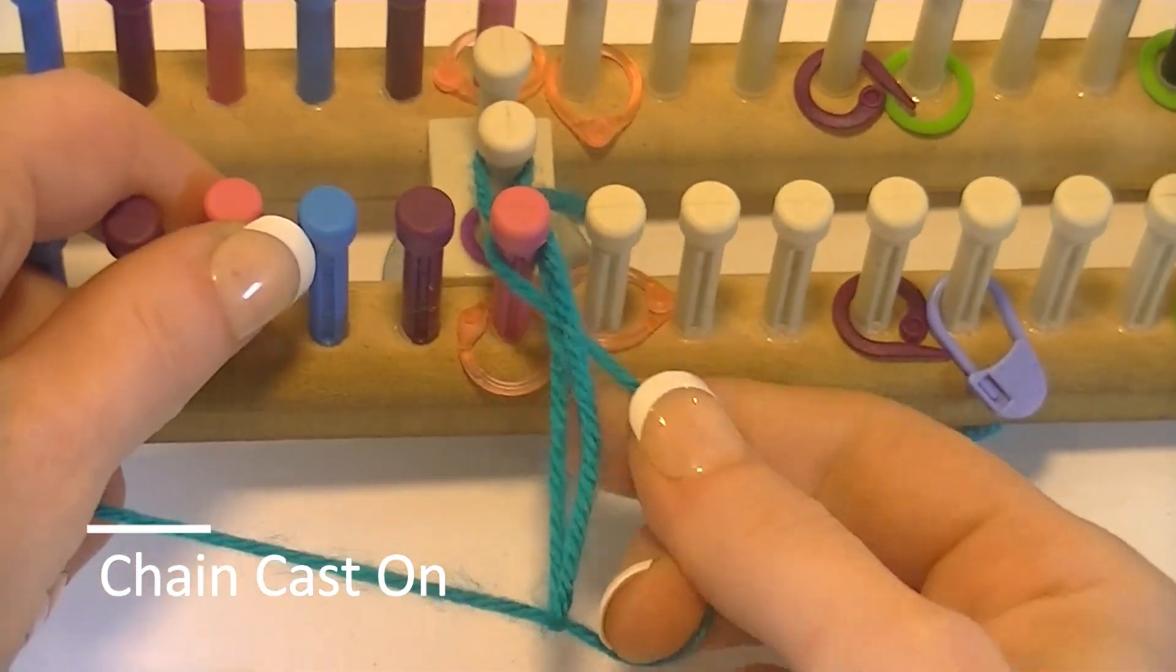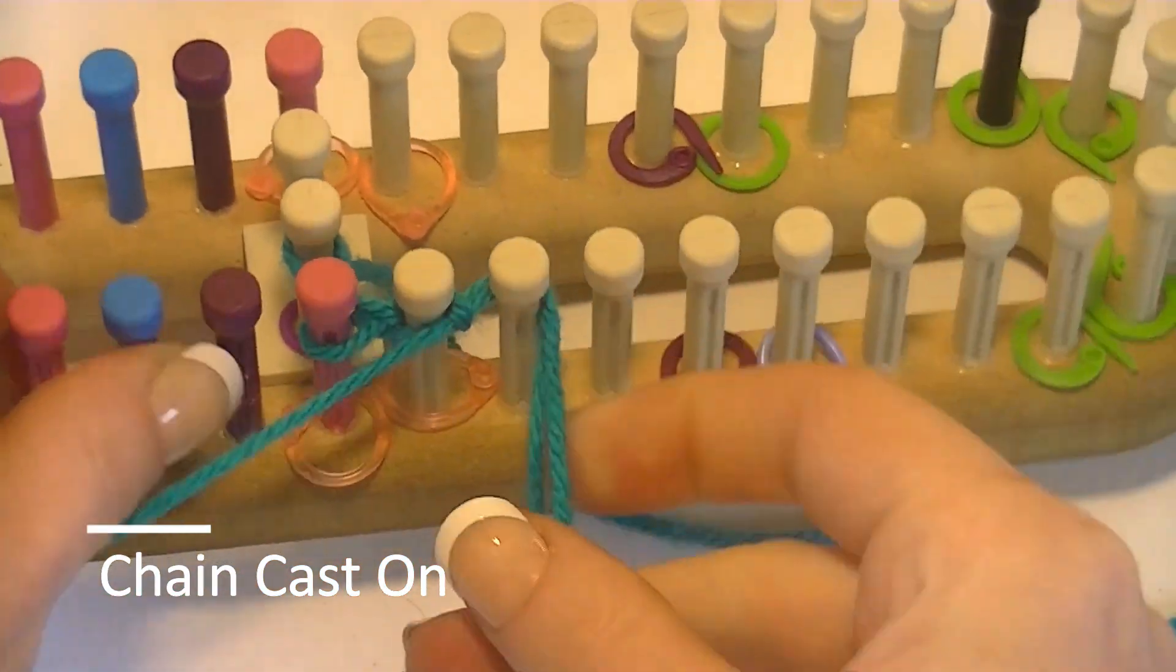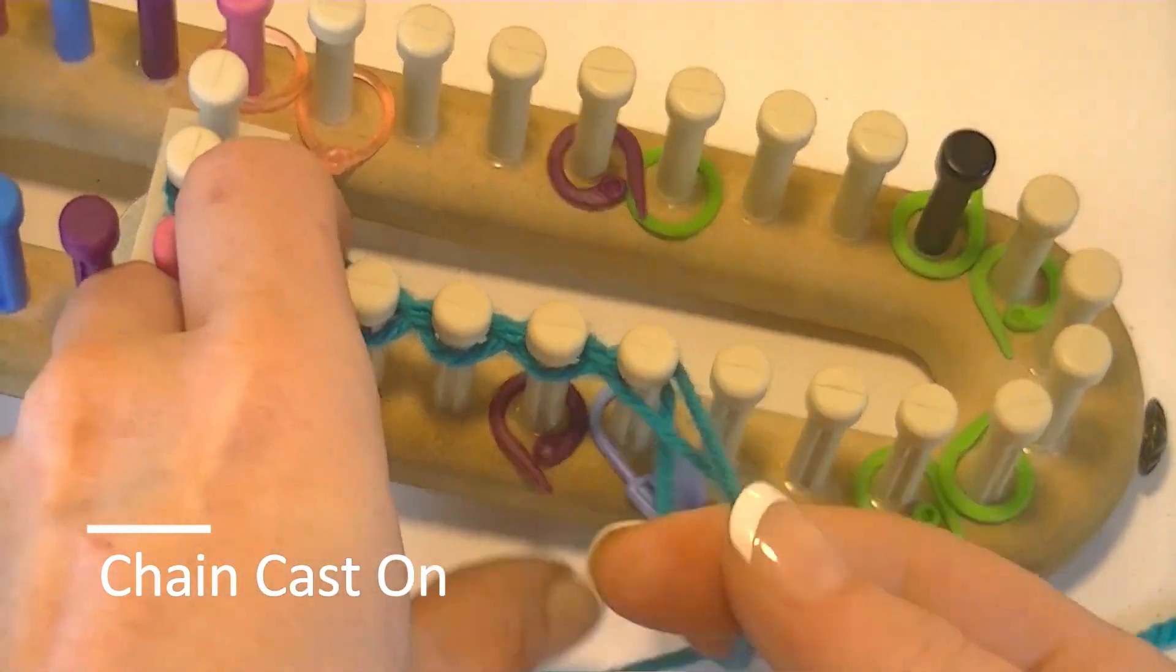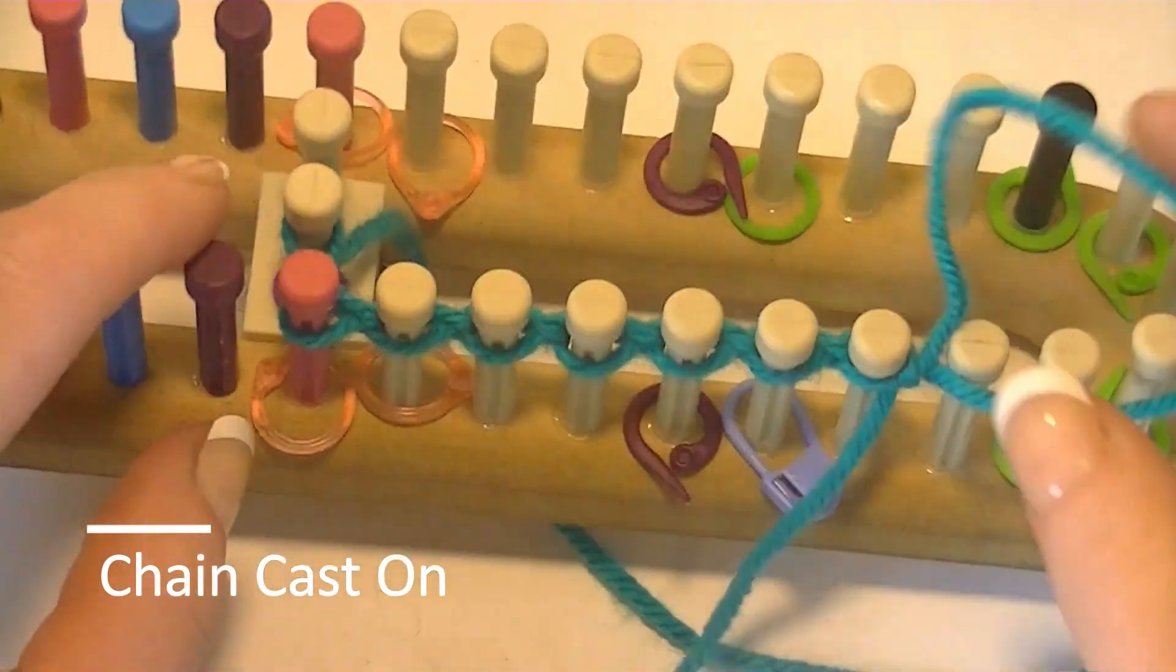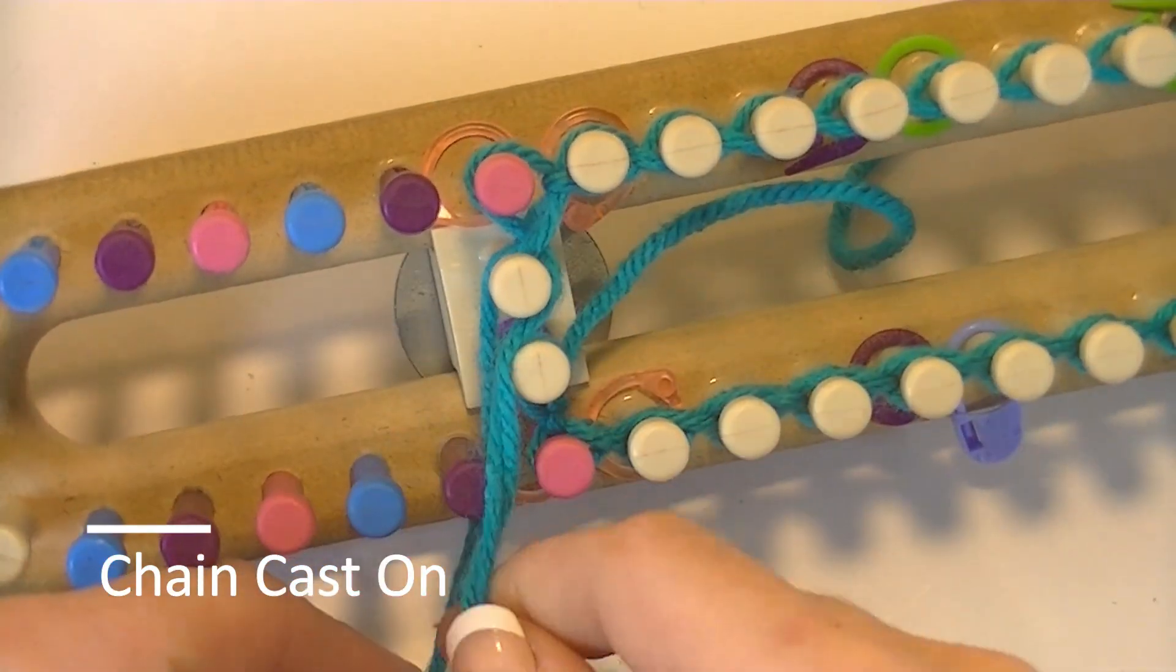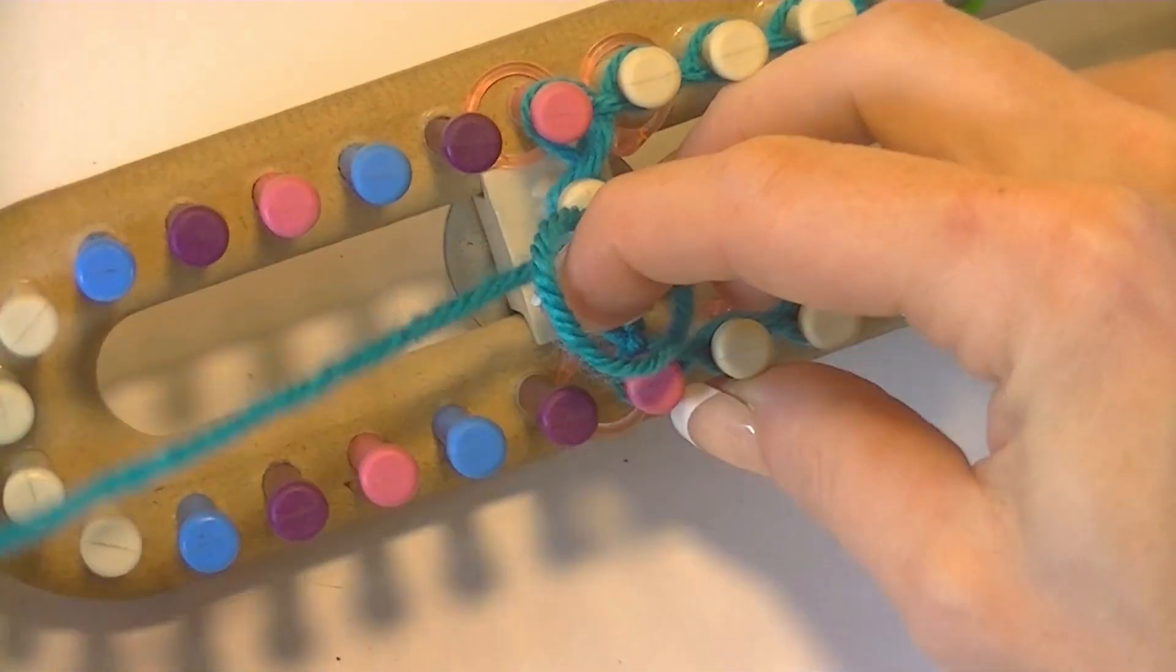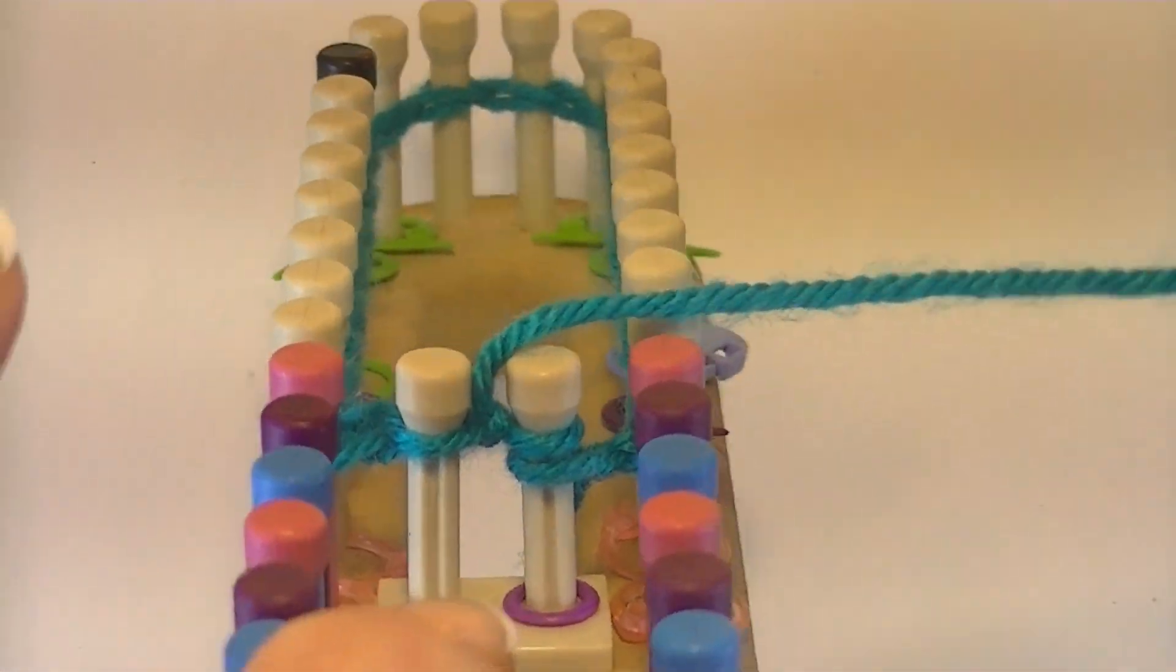Now I have a loop and then the string coming from my working yarn. You'll see that strand will tighten up that loop. For each peg, I just pull the working yarn through the loop. I take that loop, put behind the next peg. This is your chain cast on, also known as a crochet cast on. This is just a version that does not require a crochet hook to complete. Go ahead and work all the way around. That first peg will have two stitches on it. You're going to treat both the stitches as one stitch.